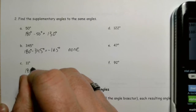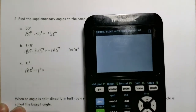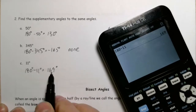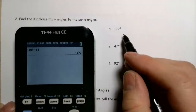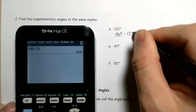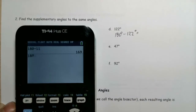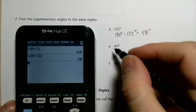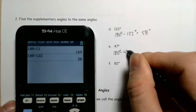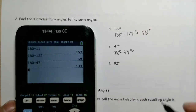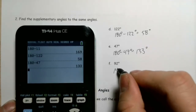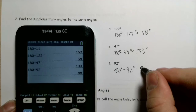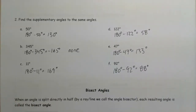180 minus 11 degrees gives us 169 degrees — that's the supplement of 11 degrees. For 122, the complement didn't apply, but 180 minus 122 gives us a nice angle of 58 degrees. 180 minus 47 degrees gives us 133 degrees. And 180 minus 92 degrees gives us 88 degrees. That's really all you have to do.